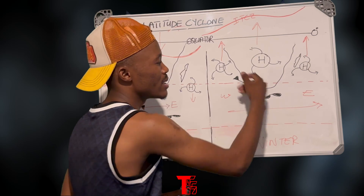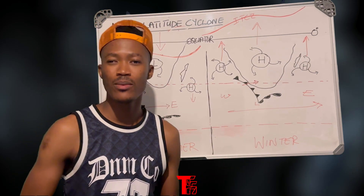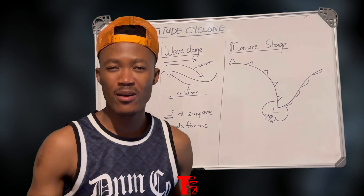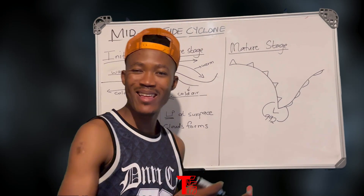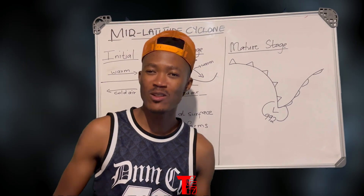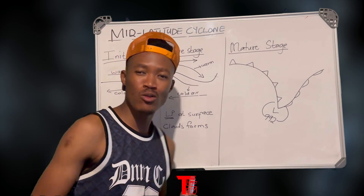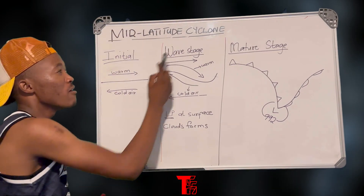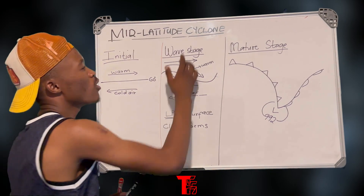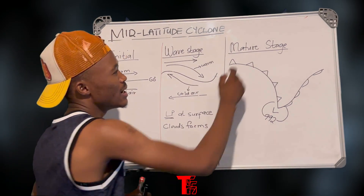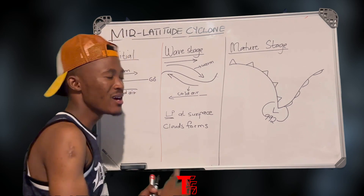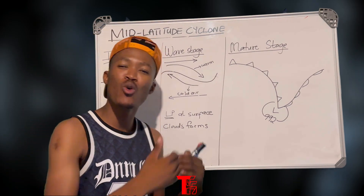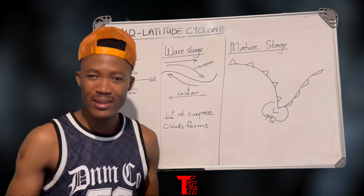Now let us discuss the stages of mid-latitude cyclones. It starts off with the initial stage, followed by the wave stage — also called the development stage — then the mature stage, after which the system progresses into the occlusion stage before it dissipates.